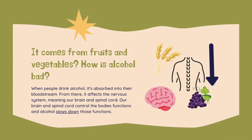Some people think alcohol sounds healthy because it comes from foods that are pretty good for us, but it's not exactly healthy. When people drink alcohol, it's absorbed into their bloodstream. From there it affects our nervous system — our brain and spinal cord — which controls all of our body's functions. The human brain is still developing in our teens and isn't fully developed until our mid-20s, so alcohol can have significant effects on the teen brain and overall brain health.